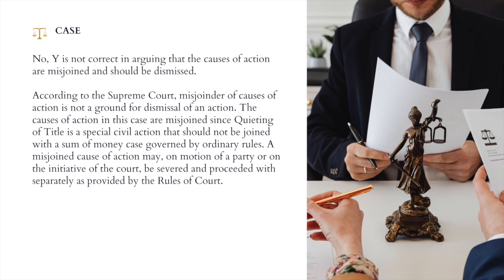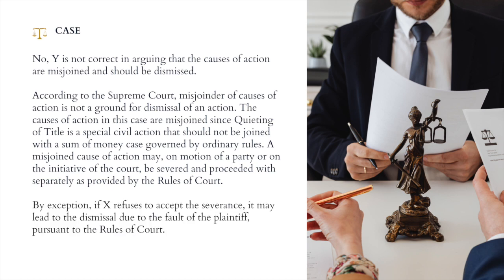The causes of action in this case are misjoined since quieting of title is a special civil action that should not be joined with a sum of money case governed by ordinary rules. A misjoined cause of action may, on motion of a party or on the initiative of the court, be severed and proceeded with separately as provided by the Rules of Court. By exception, if X refuses to accept the severance, it may lead to the dismissal due to the fault of the plaintiff pursuant to the Rules of Court.